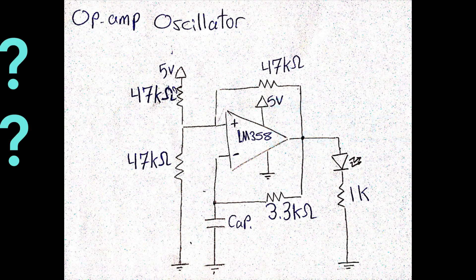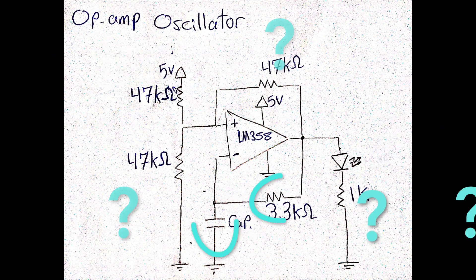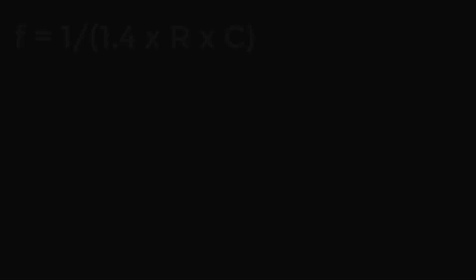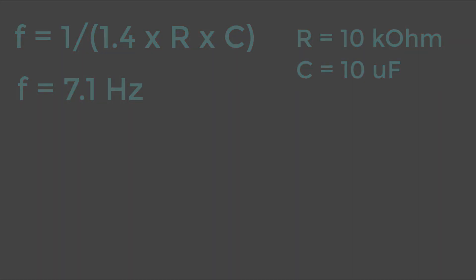So how can we determine the output switching frequency? Well, since the oscillator depends on this RC circuit, we can approximate the output switching frequency using the time constant formula. For the sake of demonstration, I've chosen 10 kilohm and 10 microfarad for the RC network, and by applying the formula, I should be getting something around 7 Hz.